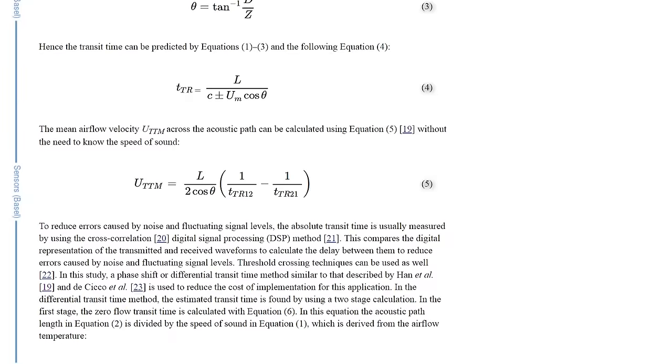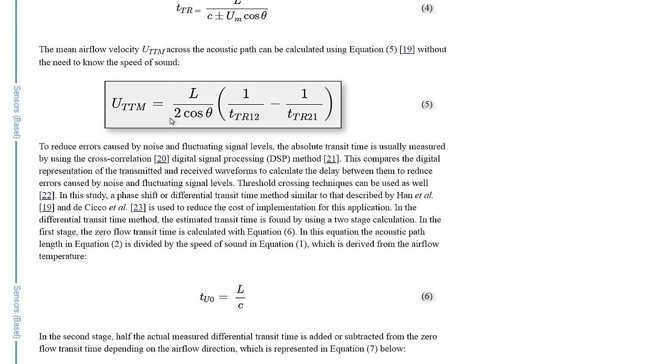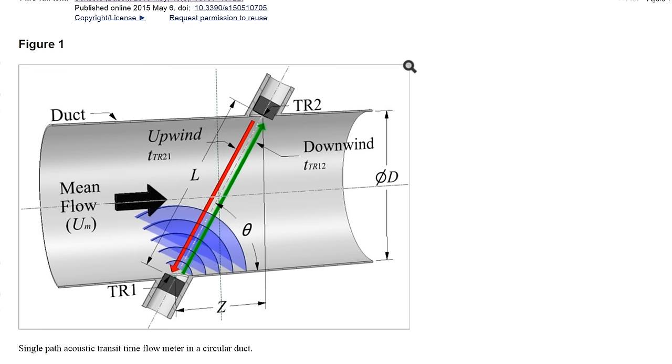The general principle is that sound waves propagate faster in the direction of airflow than against it. Based on precisely measured transit times in both directions, it is possible to calculate the speed of airflow.